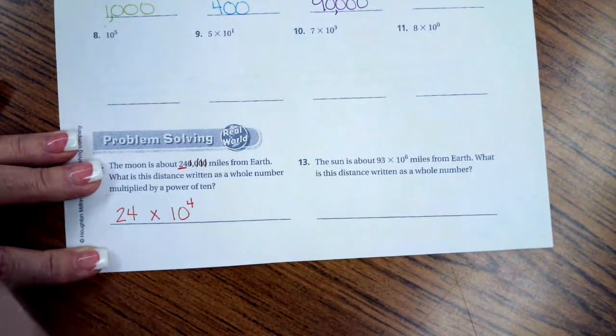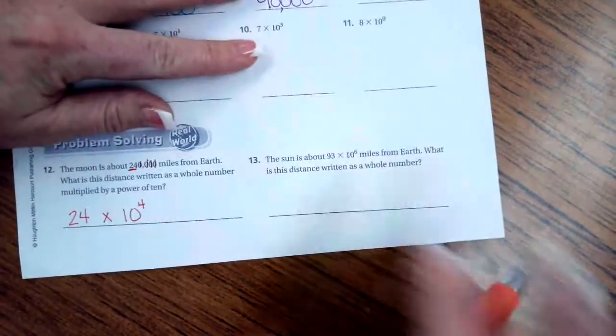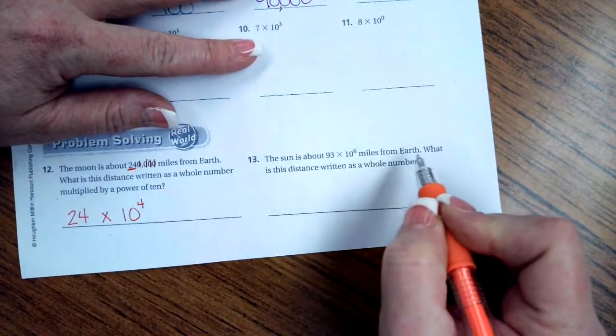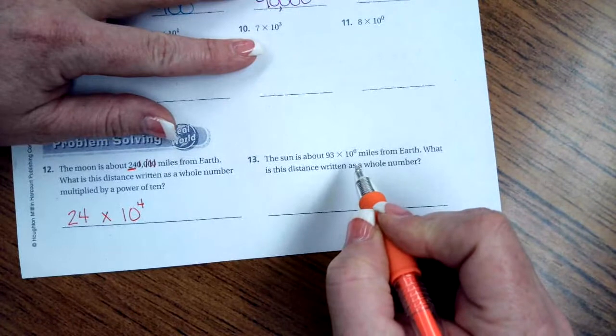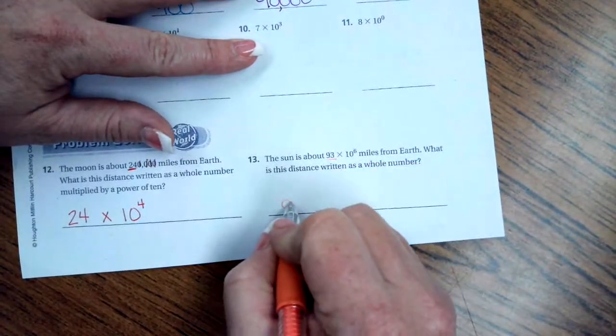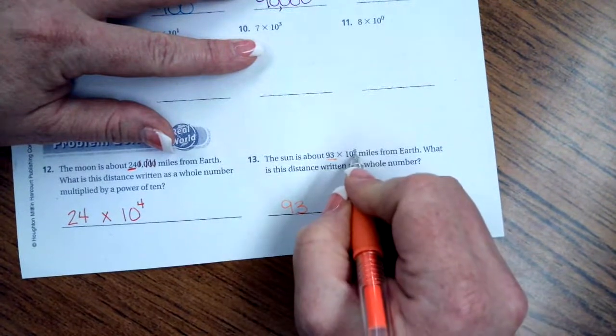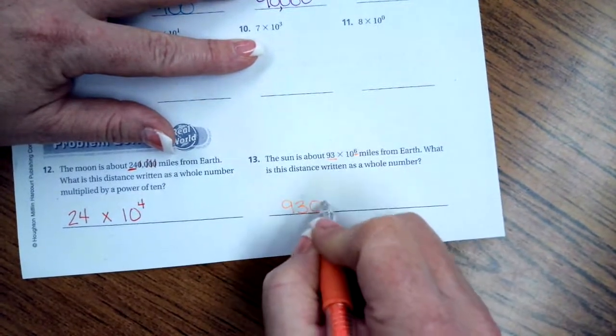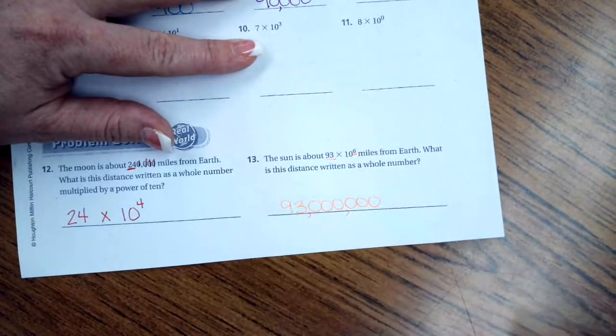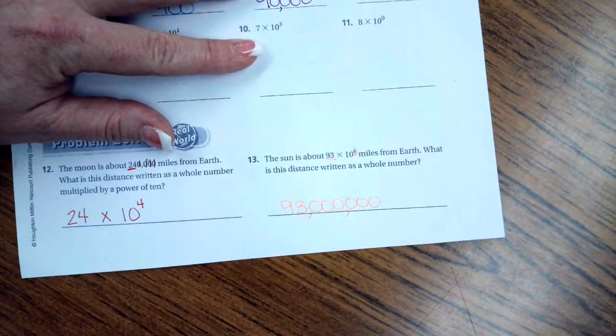Let's try number thirteen. The sun is about 93 × 10^6 miles from Earth. What is this distance written as a whole number? So again, 93 is going to be our first number, and then we're going to have six zeros: one, two, three, four, five, six. There you go.